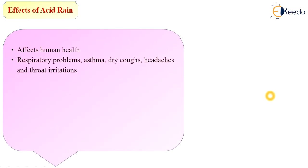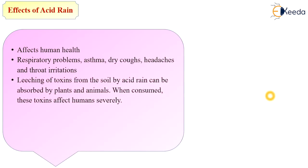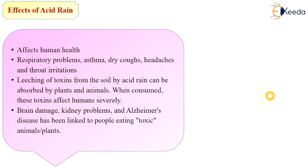Acid rain also affects human health. Effects include respiratory problems, asthma, dry cough, headache, and throat irritation. Leaching of toxins from the soil by acid rain can be absorbed by plants and animals; when consumed, these toxins affect humans severely. Brain damage, kidney problems, and other diseases have been linked to people eating toxic animals and plants.